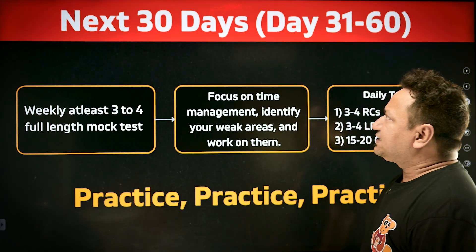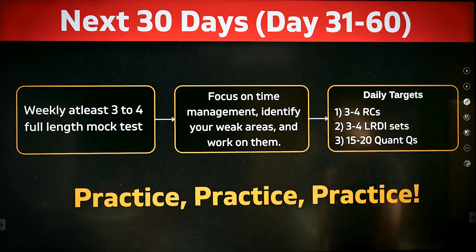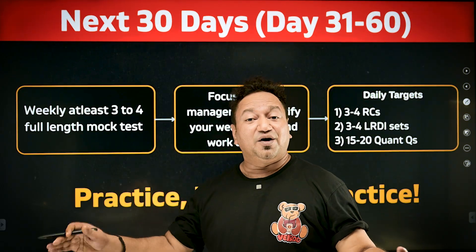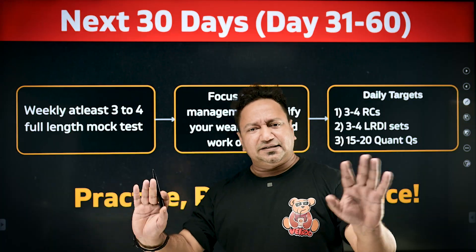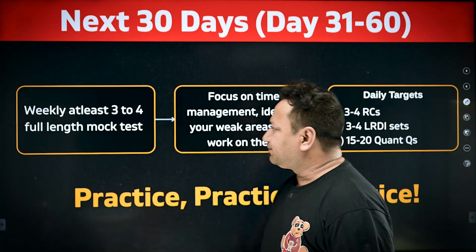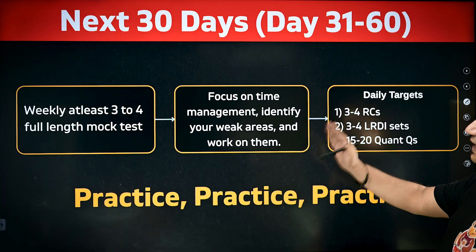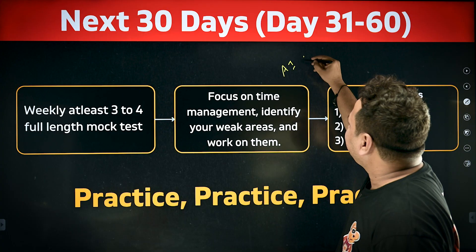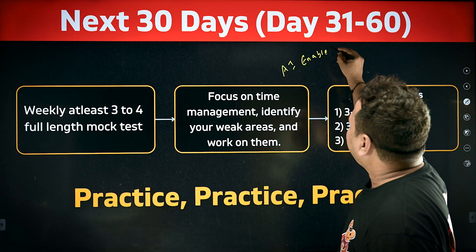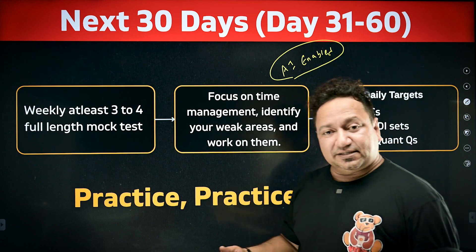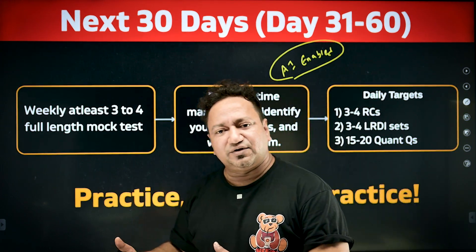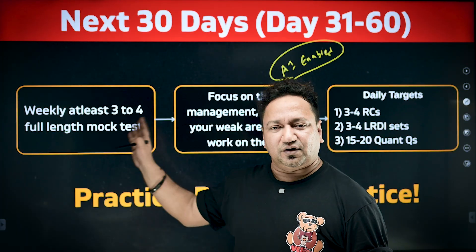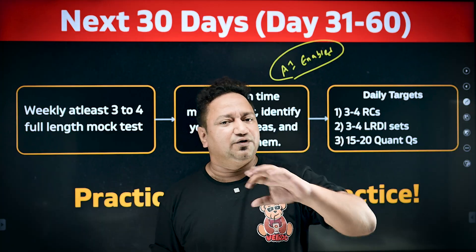Next comes the second phase — next 30 days, day 31 to day 60. Weekly, you should be solving at least three to four full-length mock tests. If you solve three, it's good. Every alternate day, solve a mock test. Focus on time management, identify your weak areas and work on them. We have India's first AI-enabled mock platform which will help you with analysis, reducing analysis time from two to three hours down to not more than 30 minutes. Use that platform and solve mocks from the iQuantus full-length mock series.